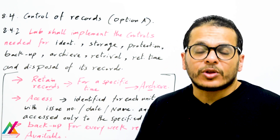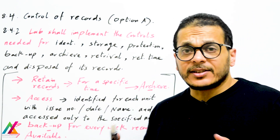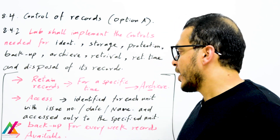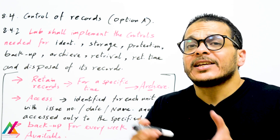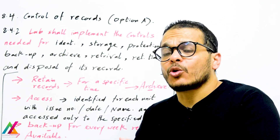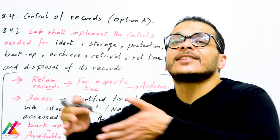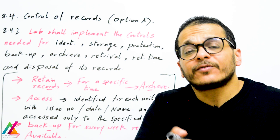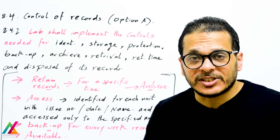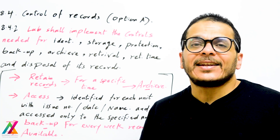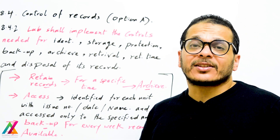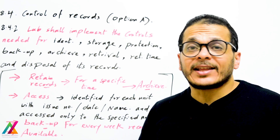The lab shall implement controls for identification, protection, storage, backup, archiving, retrieval, retention time, and disposal of its records. Although not mandatory, it is highly recommended to have a specific procedure covering all these points. Identification means records shall have a specific name, issue number, and issue date. Access to records should be controlled for only the specified unit — hard copy records kept in a dedicated file, and digital records in a specific controlled folder.